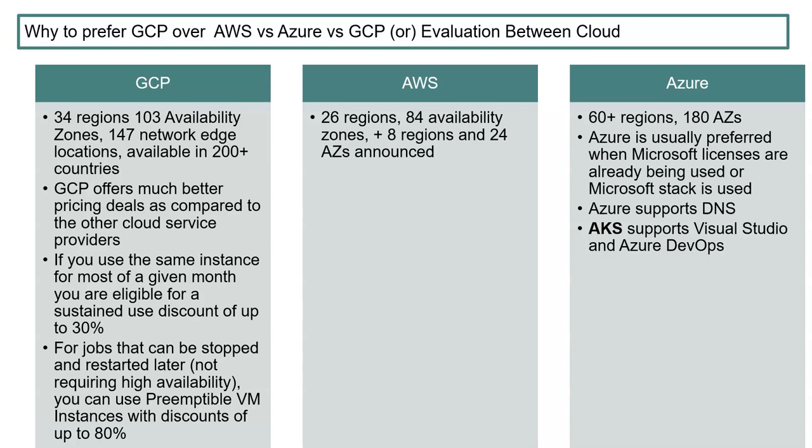GCP now has 34 regions and 103 availability zones, with 147 network edge locations available in 200+ countries. This is a really good improvement compared to three or four years back.